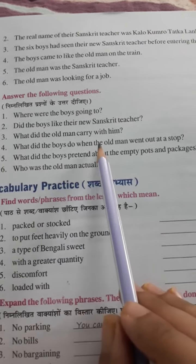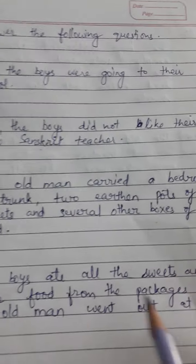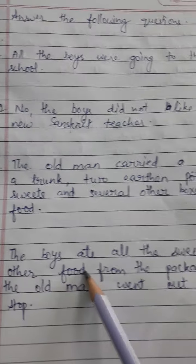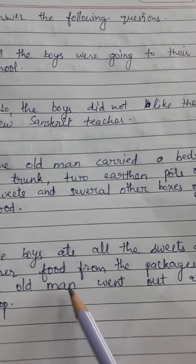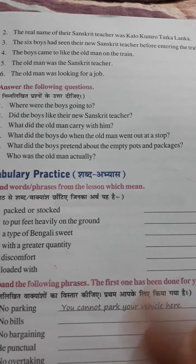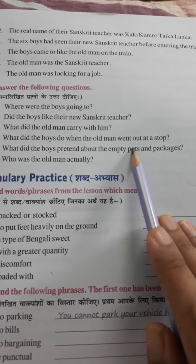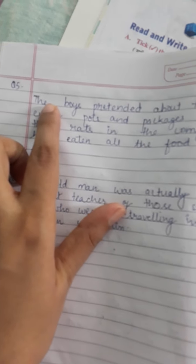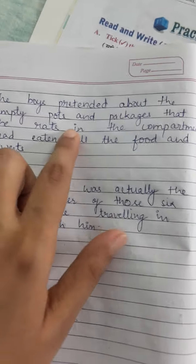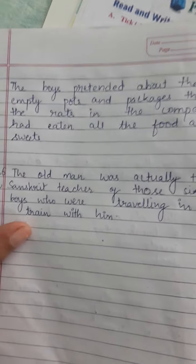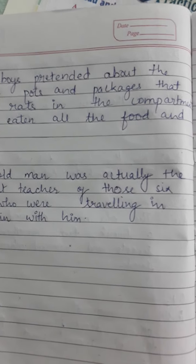What did the boys do when the old man went out at a shop? The boys ate all the sweets and other food from the packages. The boys pretended about the empty pots and packages that the rats in the compartment had eaten all the food and sweets. Ladkon ne yeh dikhaya ki compartment mein jo chuhye the, ve sara khana aur mithaiyaan kha gaye.